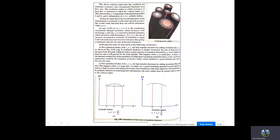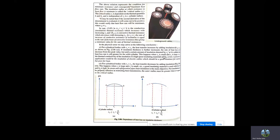There can be two scenarios for a cylinder. In scenario one, r1 is less than rc. The heat transfer increases by adding insulation until r2 equals rc. As insulation thickness is further increased beyond rc, the rate of heat loss decreases from the peak value. Until a certain amount of insulation denoted by r2-prime is added, the heat loss is still greater than that of the bare solid cylinder.